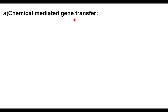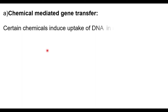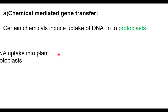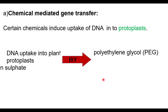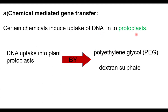Chemical mediated gene transfer is the first direct method. Certain chemicals induce uptake of DNA into protoplasts. A protoplast is a plant cell without a cell wall — the cell wall is the outermost part of the plant cell, and removing it leaves the protoplast. DNA uptake into plant protoplasts is facilitated by chemicals like polyethylene glycol (PEG) and dextran sulphate.